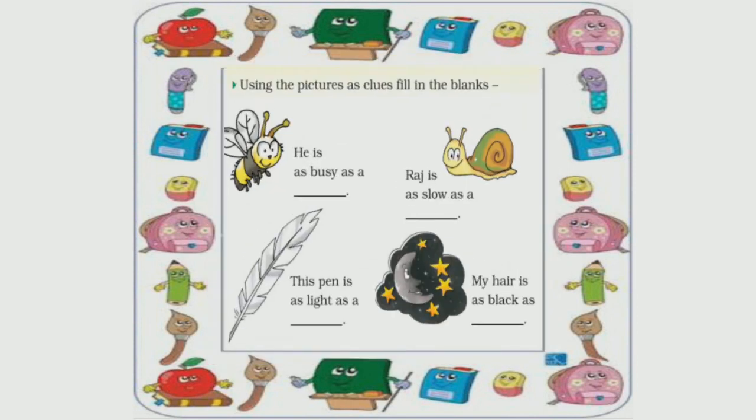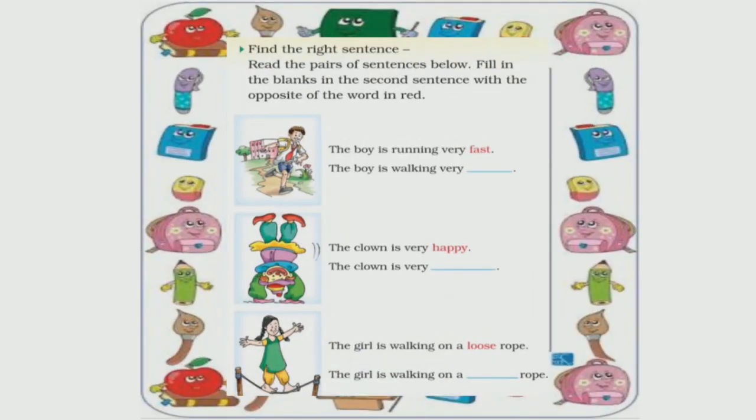Next is: using the pictures as clues, fill in the blanks — by looking at the pictures, complete the blanks with the help of clues. Next is: find the right sentence — read the pairs of sentences below and fill in the blanks in the second sentence with the opposite of the word in red.